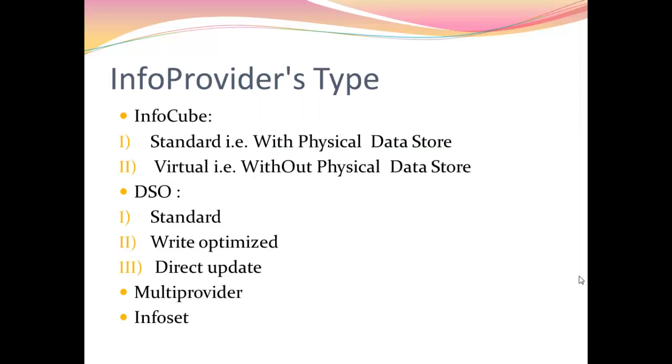Now we will see what are the different types of info providers. InfoCube are primarily divided into two different types: standard and virtual. Standard are InfoCube which hold the data physically and are further subdivided into standard InfoCube and real time InfoCube. In standard InfoCube data cannot be loaded manually so planning is not allowed, whereas in real time InfoCube we can load the data manually so planning can be done. It is mostly used by APO or BPC consultant.